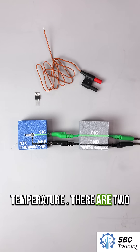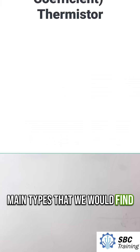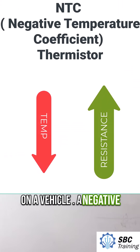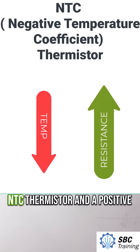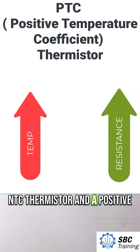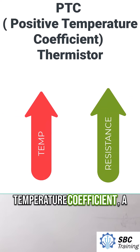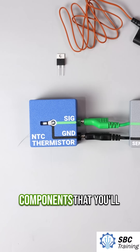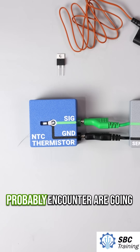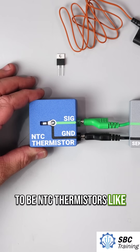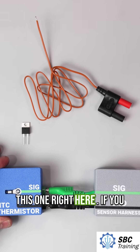There are two main types that we would find on a vehicle: a negative temperature coefficient, an NTC thermistor, and a positive temperature coefficient, a PTC thermistor. Most of the components you'll probably encounter are going to be NTC thermistors like this one right here.